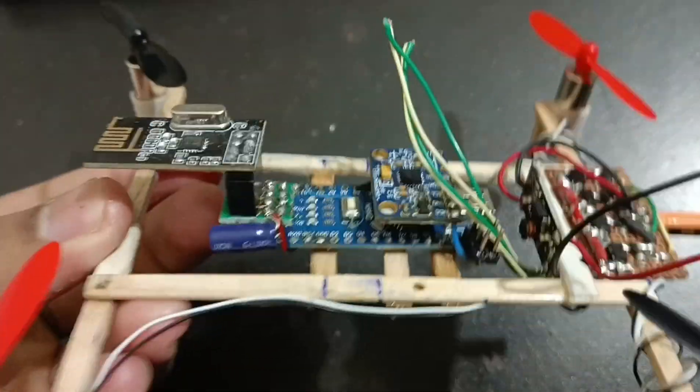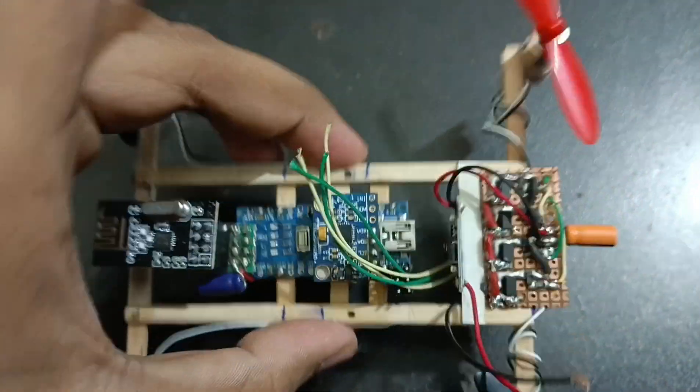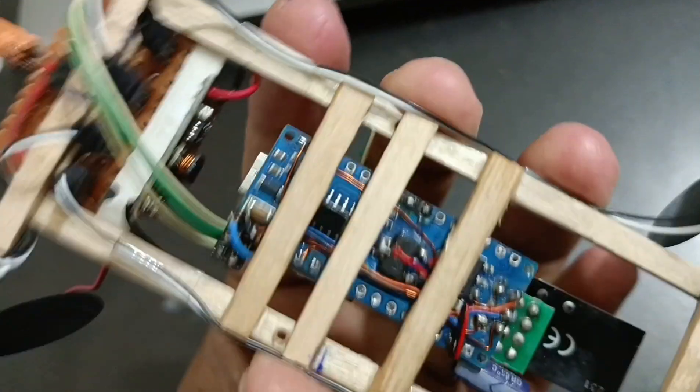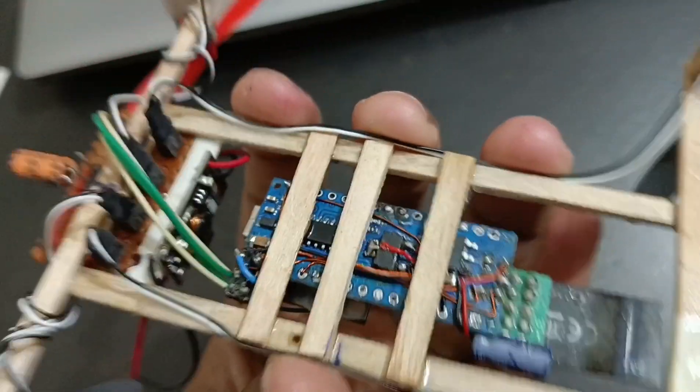After that, I have attached the main board on my drone. Make sure that the gyro sensor should be on the middle portion of the drone.